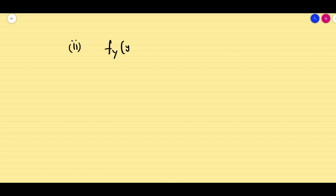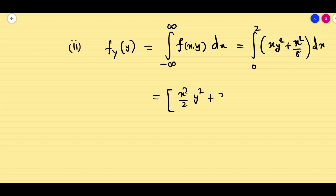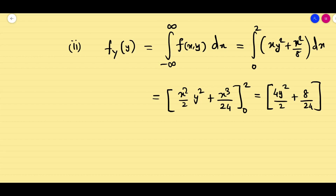Next we find the marginal function of Y, f_Y(y). We integrate from minus infinity to infinity of f(x, y) dx, with x limits from 0 to 2: integral of xy² + x²/8 dx. Integrating gives x²y²/2 + x³/24, evaluated from 0 to 2, giving 4y²/2 + 8/24, which simplifies to 2y² + 1/3. This is our f_Y(y). Once you have both marginal functions, you are on the safer side.